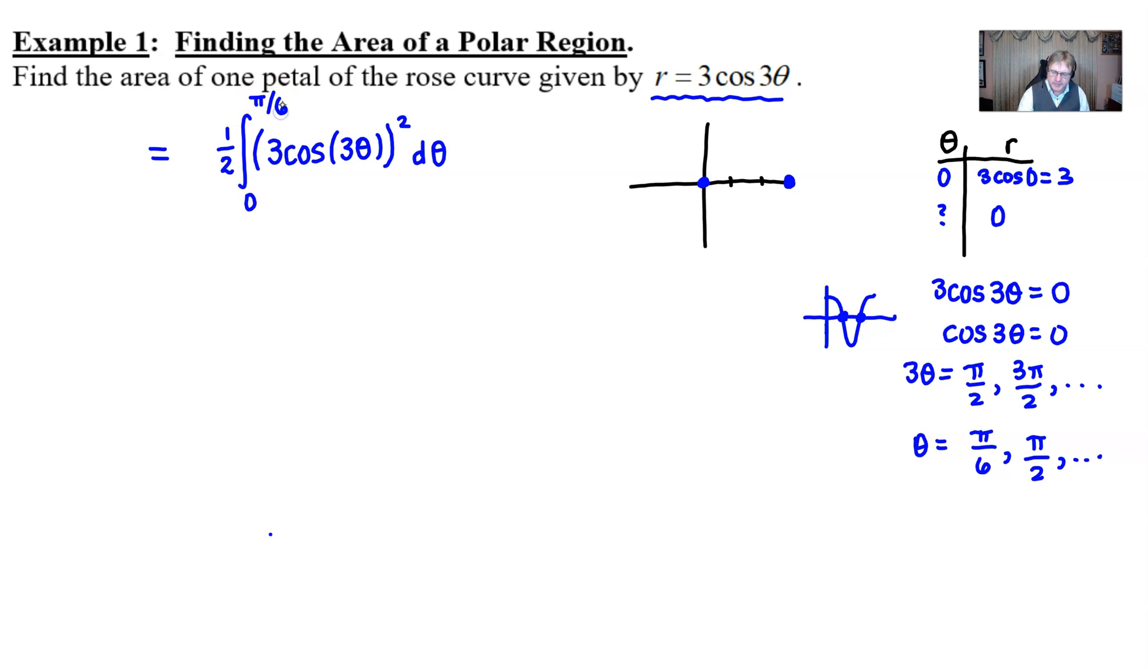Those are the first couple and it's really the first one that we're most interested in because we are going to go from this point to this point from zero to pi over six. You have just discovered your boundaries of half of the rose petal. Now before I forget because this is only going to give us half the rose petal you would need to double this. That's very very important. We have to make sure that that happens.